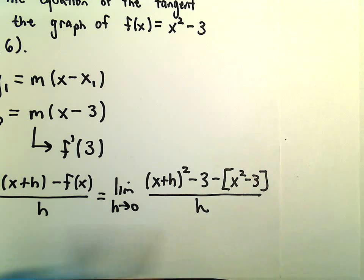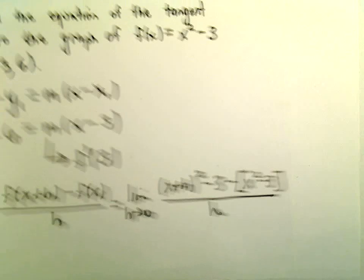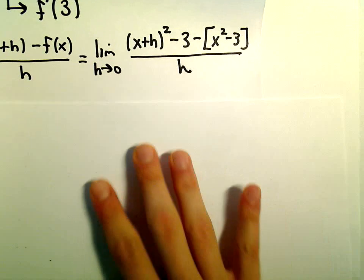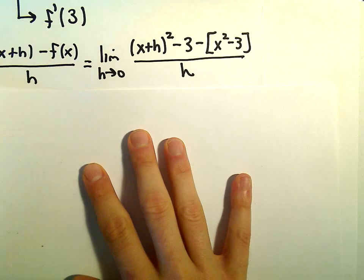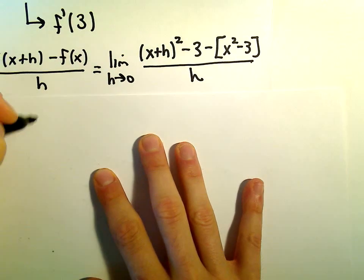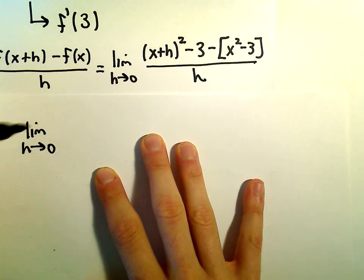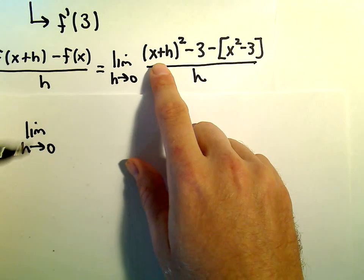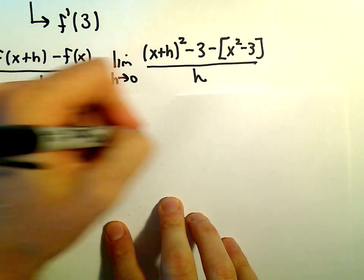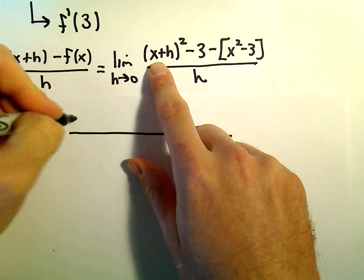Now we simplify this expression. The limit as h approaches 0, where (x+h)² is (x+h) times (x+h). Distributing that out, we get x² plus xh plus xh, which gives us